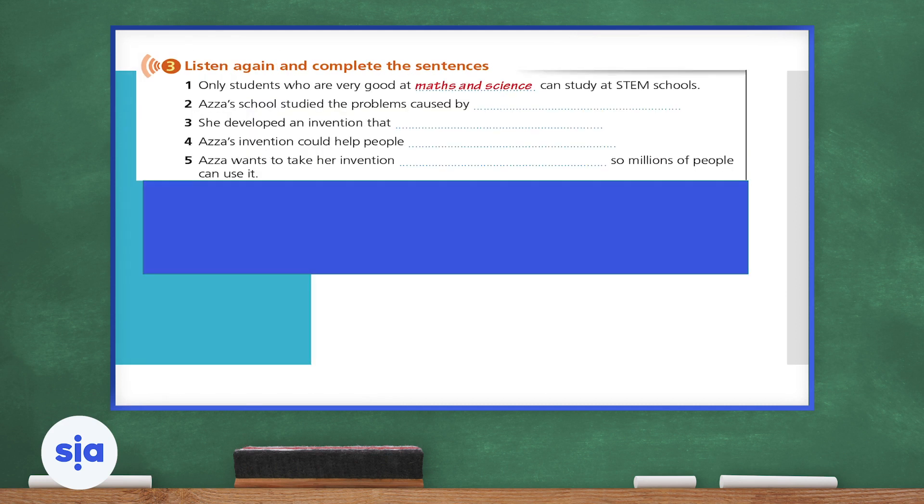Okay, now let's move on to exercise three. If you need to listen to the audio one more time before you start answering those questions, you can do so. Definitely. Okay, let's look at number one. We're going to complete the sentences. Only students who are very good at maths and science can study at STEM school. Let's move on to number two. Azza's school studied the problems caused by blank. Caused by polluted water around the world. So Azza's school studied the problems caused by polluted water around the world.